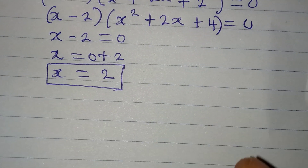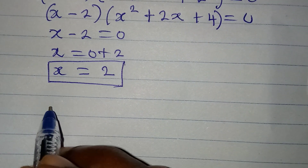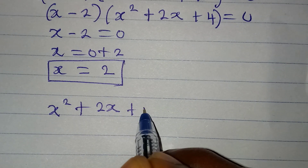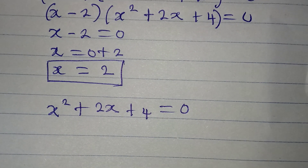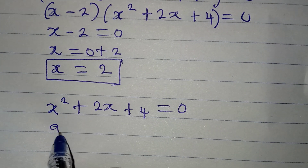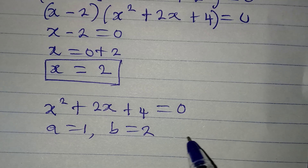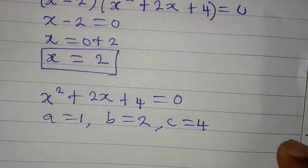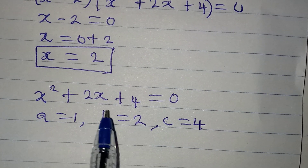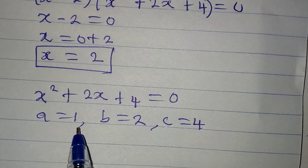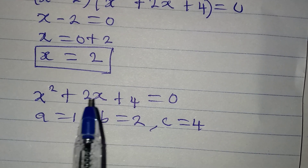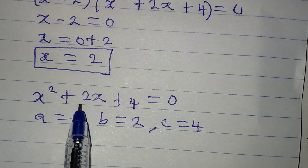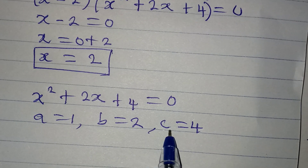Now to get the other 2 solutions, we will pick the quadratic equation: x squared plus 2x plus 4 equals 0. According to this quadratic equation, a is 1, b is 2, and c is 4. Some persons may be asking how I got a, b, and c. We're going to use the quadratic formula. In the quadratic formula, a is the coefficient of x squared, b is the coefficient of x which is 2, and c is the constant which is 4.